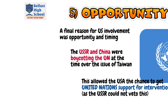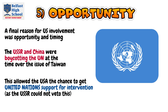Fifthly and finally, it's about opportunity for the United States of America. Timing is crucial here. The USSR and China were actually boycotting the United Nations at this time over the issue of Taiwan. This allowed the United States the chance to get United Nations support for intervention in Korea. The USSR does have a veto to stop things like this, but because it was not in the United Nations at that stage due to the boycott, it could not use it. This gave the United States the opportunity to have the moral high ground by securing UN support.